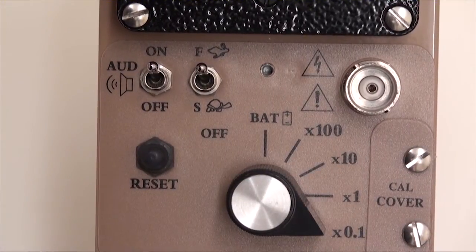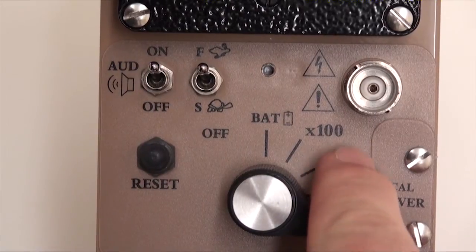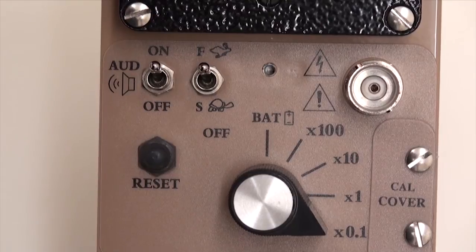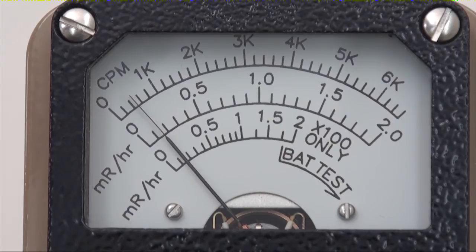The Model 3 supports four decades beginning with the x0.1, x1, x10, and x100 scales. The instrument reading is calculated by simply multiplying the value setting of the rotary switch by the value indicated by the needle on the analog scale.